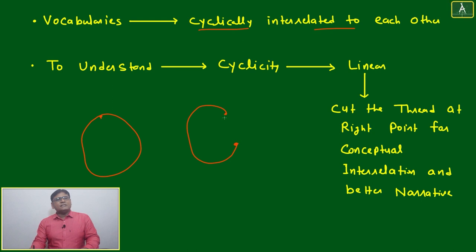From some other point also you will start, you can reach the same point. Always it will be cyclical in nature. Then what to do? Understanding everything cyclical is difficult. Then we will just make it linear. What only issue will be there? From where we have to cut to make it linear?